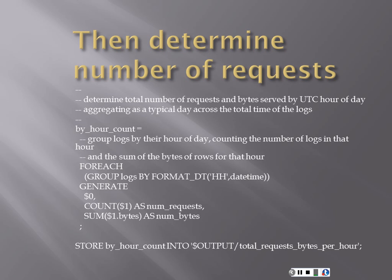We group logs by their hour of the day, counting the number of logs in that hour. If you have five logs in hour one and twenty logs in hour six, it will give you a graph of that distribution. Then we sum the bytes per row. All it's doing is counting and summing. If you just wanted the raw count, you could remove the sum line. Then we store by hour count into the output as total requests and total bytes per hour — this will dump to your S3 bucket.